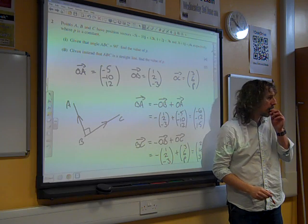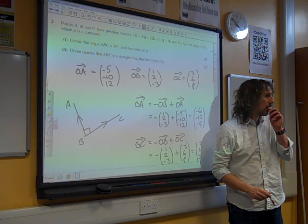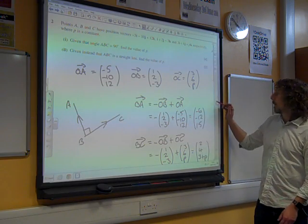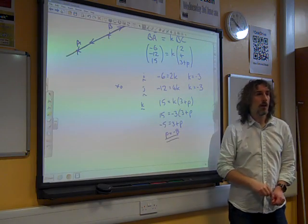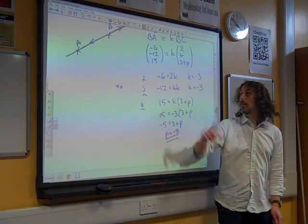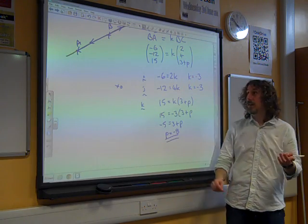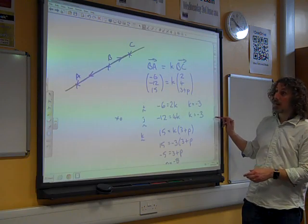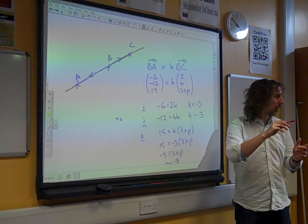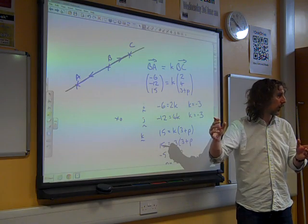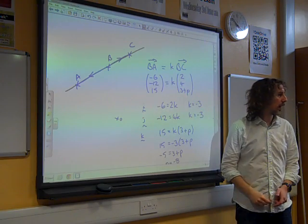For the second bit, could you use the scalar product and set theta equal to 180, because 180 is... I think it's a straight line. Yeah, I did that. Yeah, but then you have to link it in with the length of the two vectors as well. So you could do that. You could say that the scalar product is equal to, if it's 180 or even if it's 0, you've got either kind of 1 or minus 1. So you're saying it's equal to the product of the length of the two vectors.